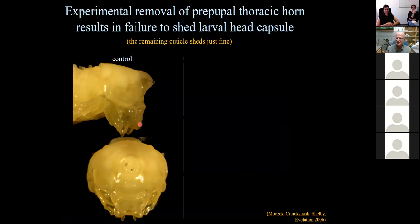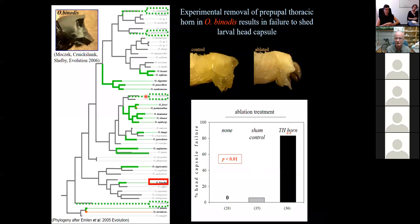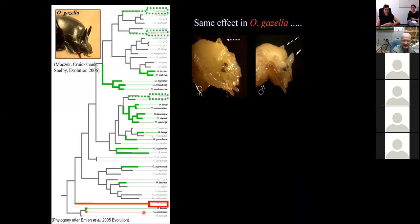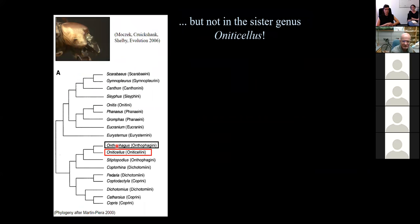So we have to test this. And what we developed is a method that destroys the precursor cells that give rise to this thoracic horn. If our hypothesis that the thoracic horn is required for the shedding of the larval head capsule is correct, then we should get pupae that lack a thoracic horn and those should have failed to shed their larval head capsule. And that is exactly what happened. You can do this experiment comparatively. In Onthophagus binodis, in Onthophagus gazella, which has one of the smallest thoracic horns in both males and females, you get the exact same effect, failure to shed the larval head capsule.